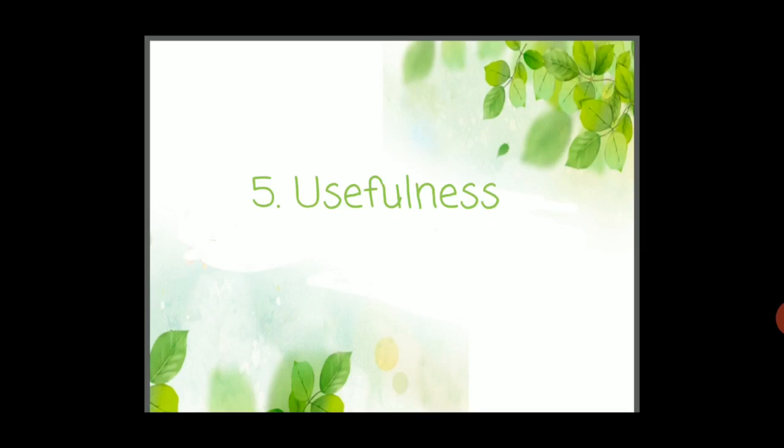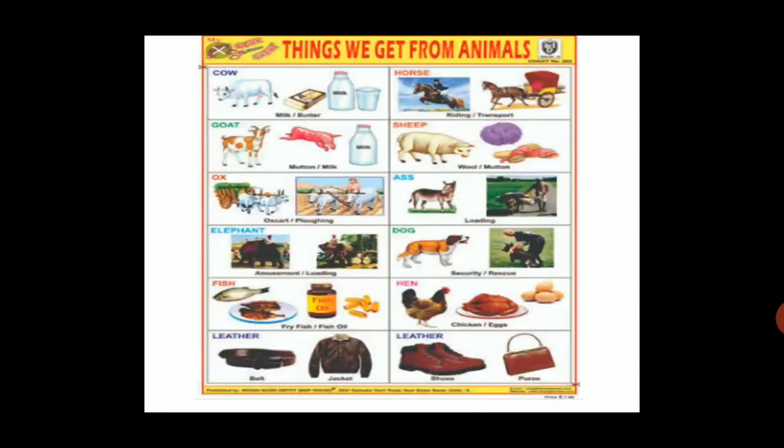Fifth point is usefulness. Animals are very useful to us. They provide us many things — like the cow gives us milk, sheep gives us wool, and honeybee gives us honey. In this point you can write what the animals give us and how they are useful to us.